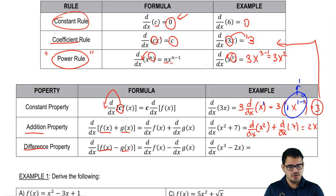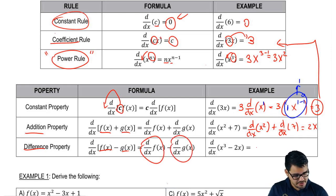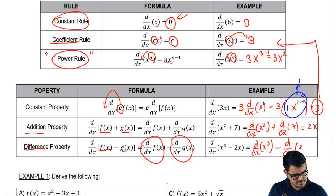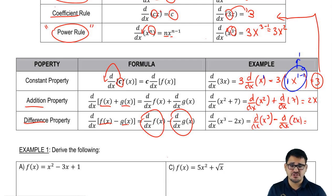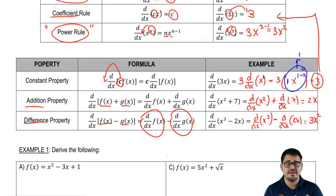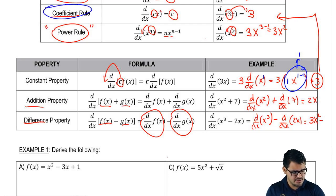Now let's go into the difference property: when we have two functions subtracting, the derivative equals the derivative of the first function minus the derivative of the second. For example, the derivative of x³ minus 2x: the derivative of x³ brings down the 3 and subtracts 1 from the exponent, giving 3x². Then the derivative of 2x — using the coefficient rule — is just 2. So the answer is 3x² minus 2, and we're done.